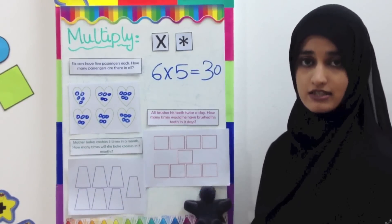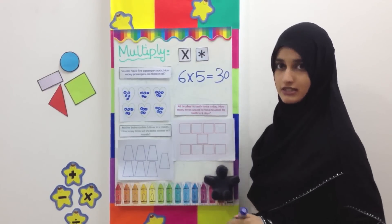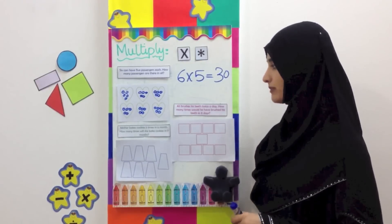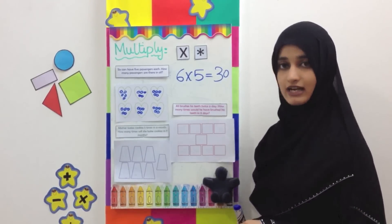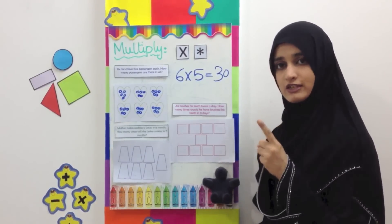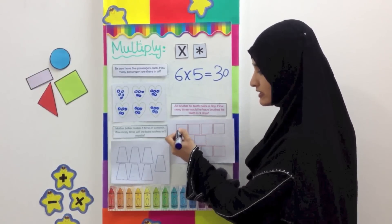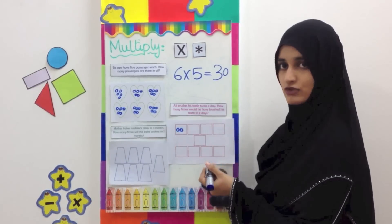He brushes his teeth twice a day. In one day he is brushing his teeth twice. How many times would he have brushed his teeth in nine days? In one day he is brushing twice, so this is one day here, this one set. He is brushing his teeth twice. In nine days, which means we are talking about nine sets now.